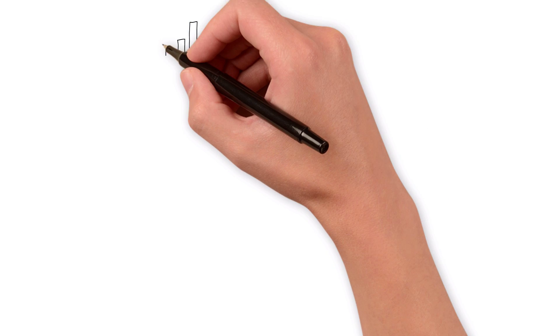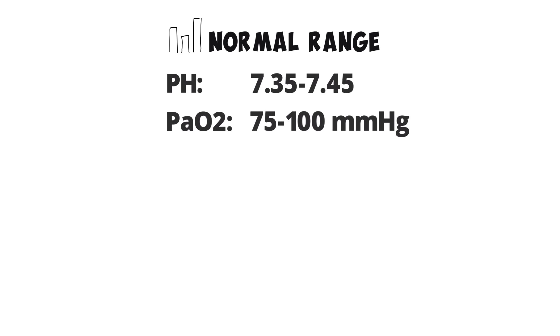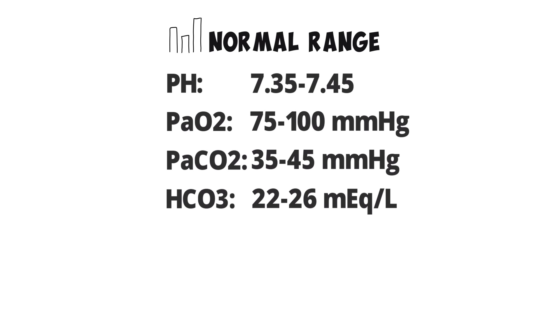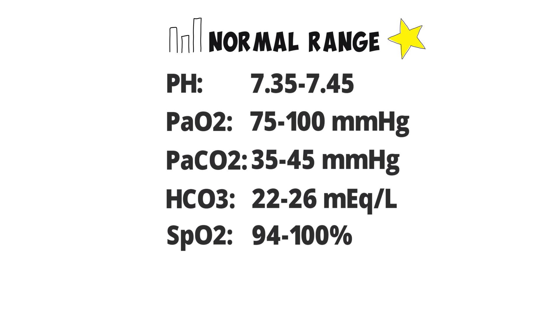These key elements all have different normal values, so we must talk about their ranges. The normal pH ranges from 7.35 to 7.45. The normal partial pressure of oxygen ranges from 75 to 100 mmHg. The normal partial pressure of carbon dioxide ranges from 35 to 45 mmHg. The normal bicarb ranges from 22 to 26 mEq/L, and the normal oxygen saturation ranges from 94 to 100%. It is important to keep in mind that normal value ranges may vary slightly in different publications, but these are typically the values you will need to remember, especially for the TMC exam.